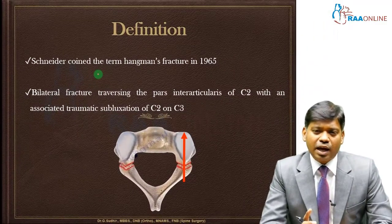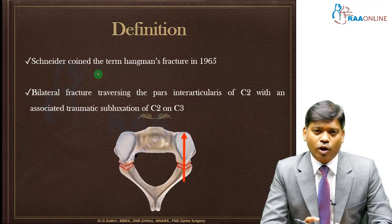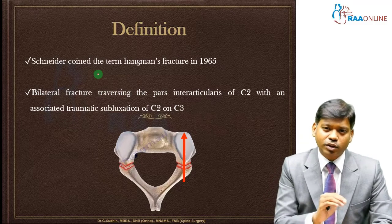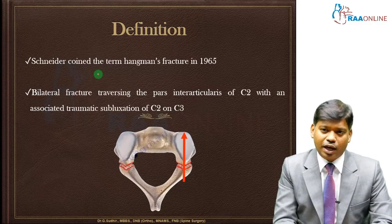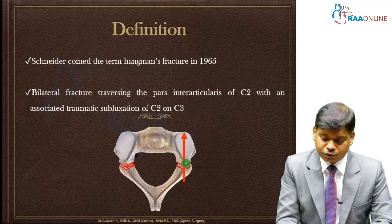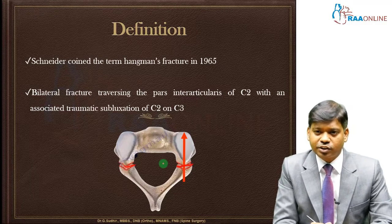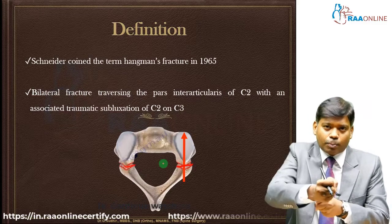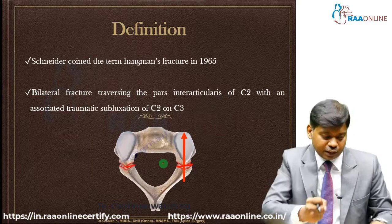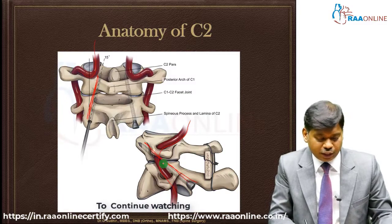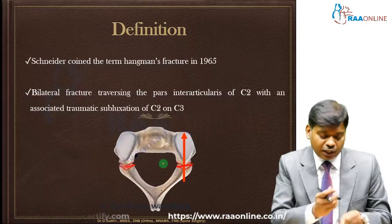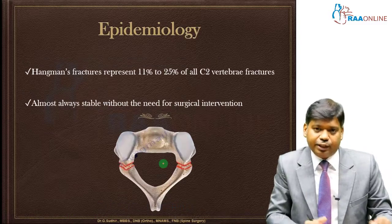The term Hangman's Fracture was first coined by Schneider in 1965. It is nothing but a bilateral fracture traversing the pars interarticularis of C2. So it is a fracture of the pars of C2 with an associated traumatic subluxation of C2 on C3 — basically, the C2 gets fractured at the pars and then subluxates over the C3.